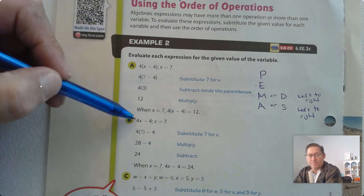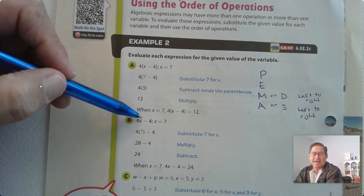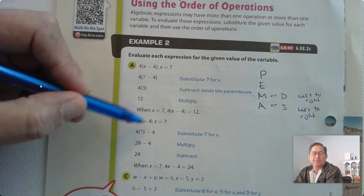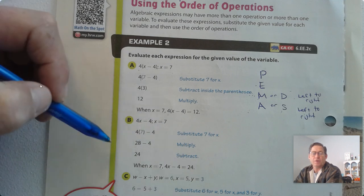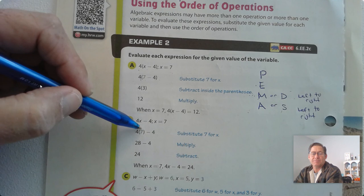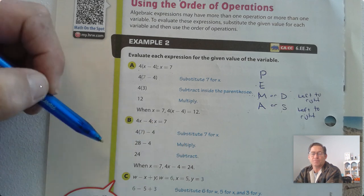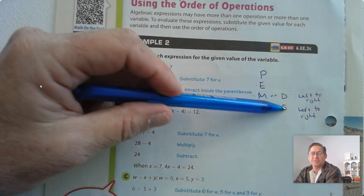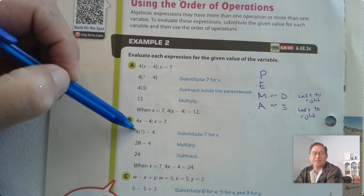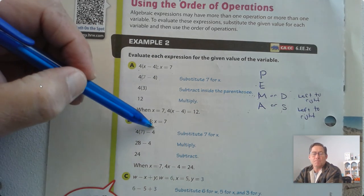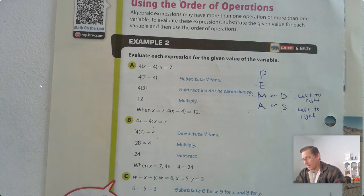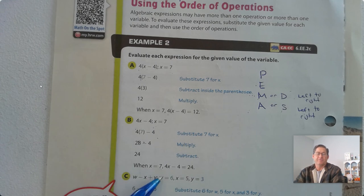Now evaluate 4 times x minus 4 when x equals 7. Substitute 7 for x, and we have 4 times 7 minus 4. Multiplication comes before subtraction, so we multiply 7 times 4 is 28, minus 4. Now subtract, and we get 24. So when x equals 7, 4 times x minus 4 is 24.